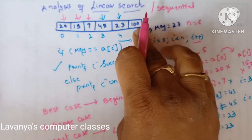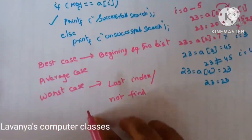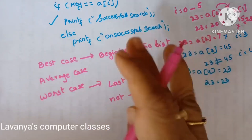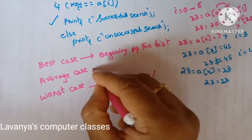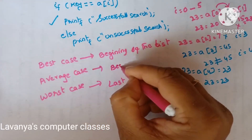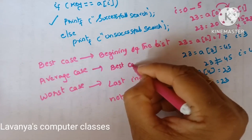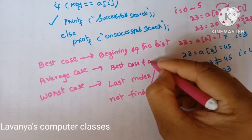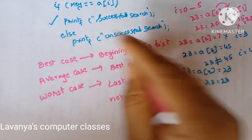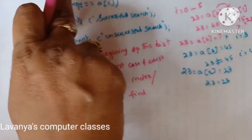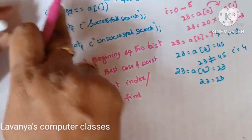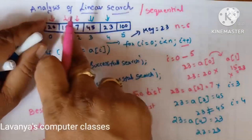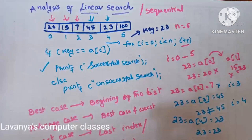Average case means it is between the best case and the worst case. That means the element is available anywhere — either not in the first position or not in the last position. It is available somewhere in between in the list. That is called the average case.